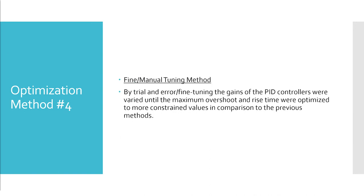The fourth optimization method is a fine-slash-manual tuning method in which the various gains were changed based off of the results from the previous controllers. By trial and error in conjunction with fine tuning, the proportional, integral, and derivative gains were varied until the output was within a more suitable and desirable range. The quantitative results will be compared in a later slide.